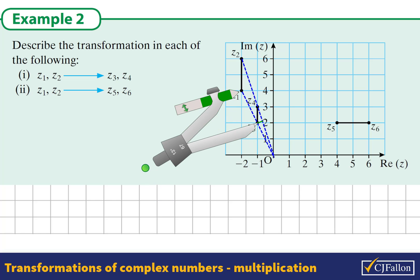However, we do notice that there is a scaling. We can see that the modulus of Z1 is twice as big as the modulus of Z3. Also, the modulus of Z2 is twice as big as the modulus of Z4. We can see that with a compass.